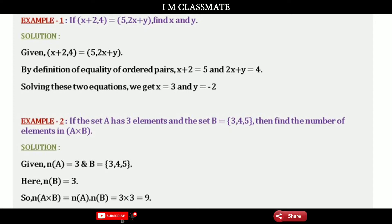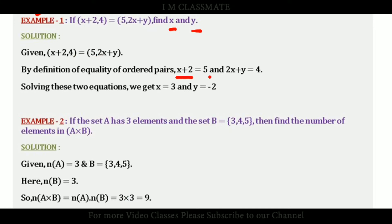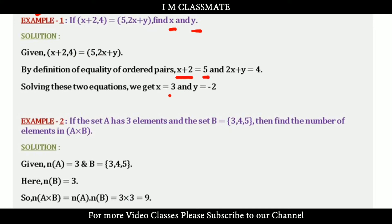Example 1. The second ordered pair is equal to 4, and the first ordered pair is equal to (5, 2x + y). Find x and y. Since the ordered pairs are equal, the first components are equal: x + 2 = 5, therefore x = 3.